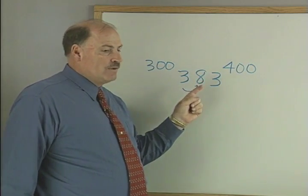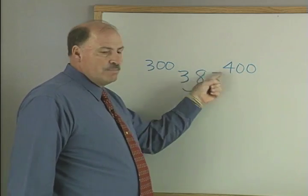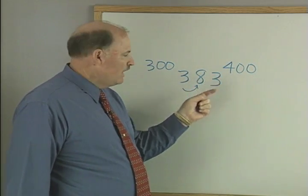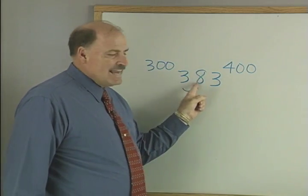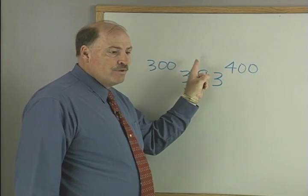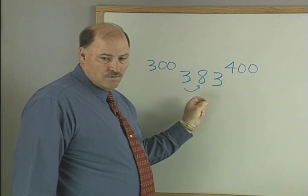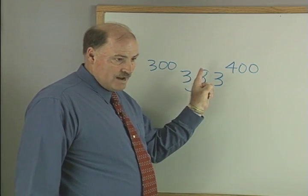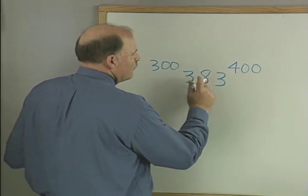Because when I round it, when I'm all done, these are both gonna be zeros, right? Now, is this eight gonna make it go up or make it a zero? Up, right. So this is going to be rounded to 400.